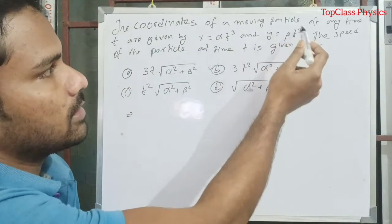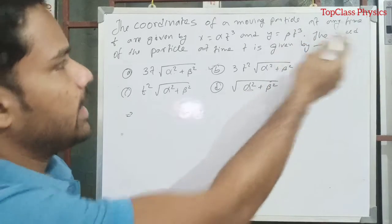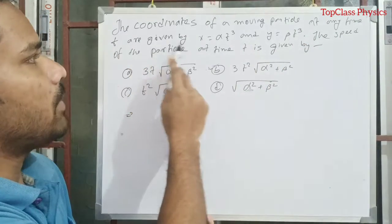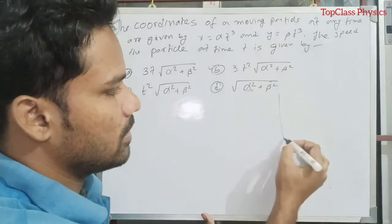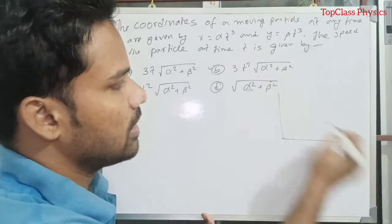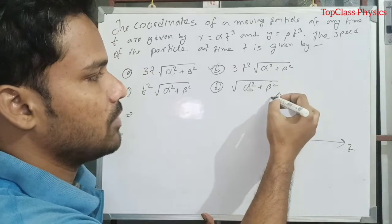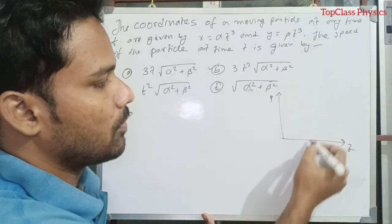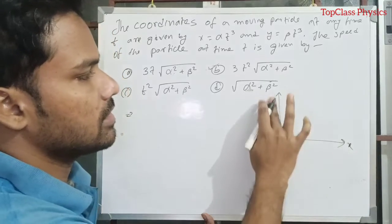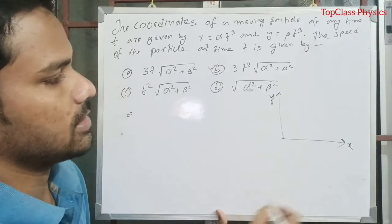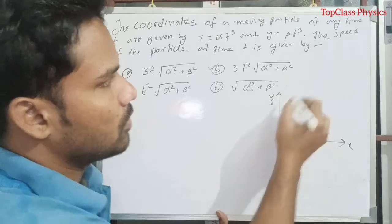The coordinates of a moving particle at any time T are given by - this is X and this is Y. The position is here, that is point A. This is X axis, this is Y axis.